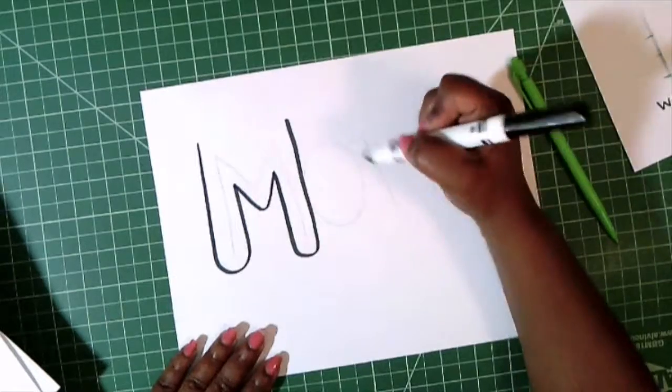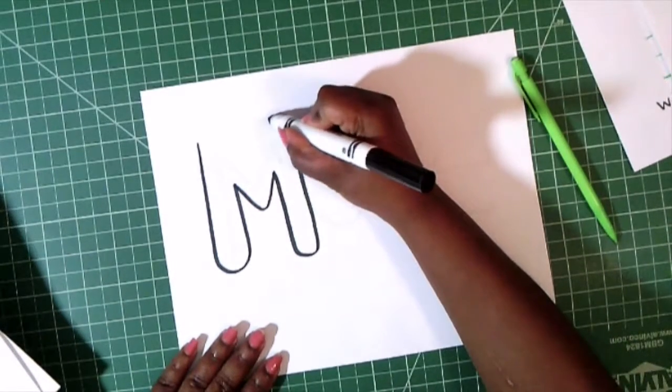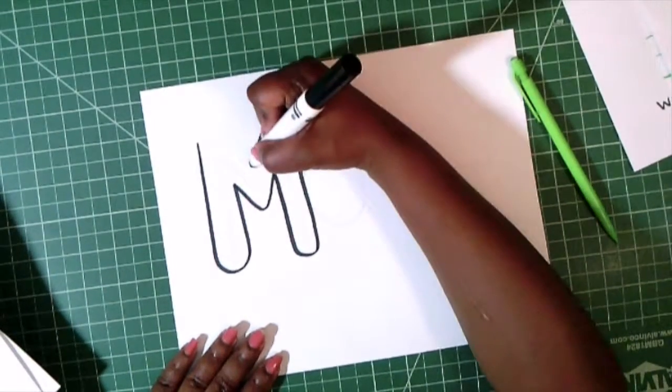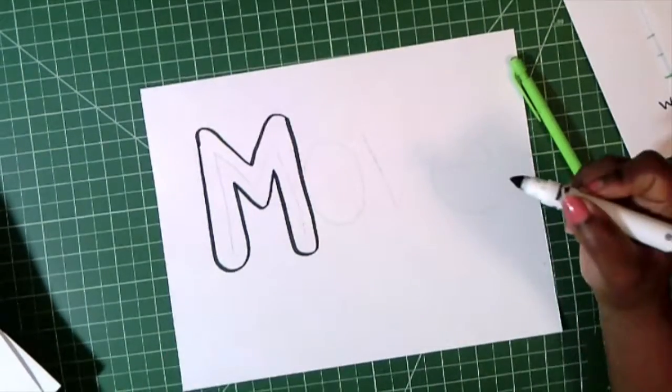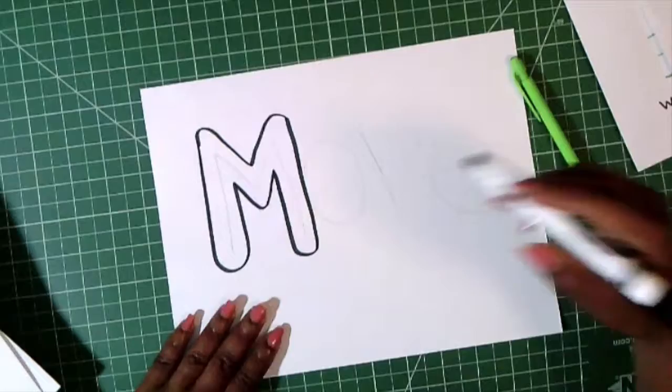And it's okay if it touches the other letters that are there. Around, diagonally down, up, and around. So that's my letter M. I'm going to continue doing that for all the rest of my letters.